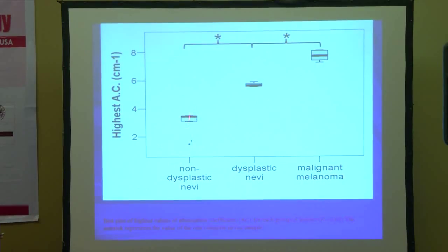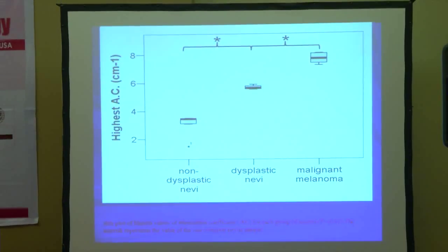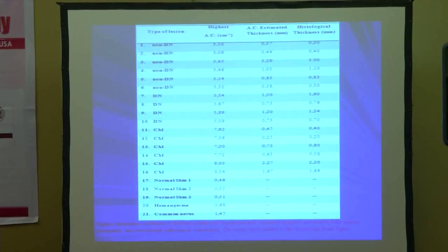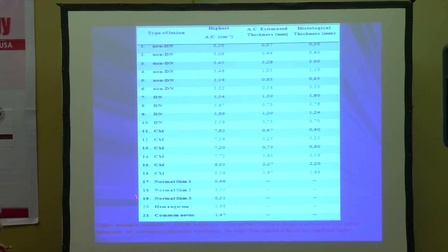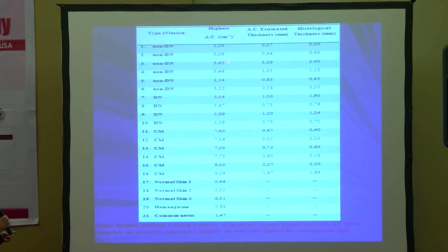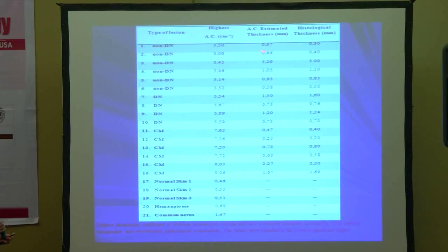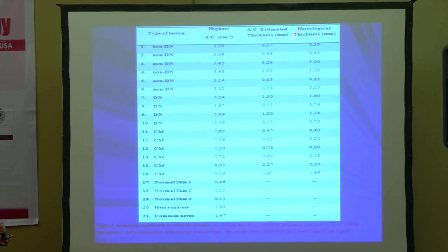Here again you can see in this graph that there is a big difference in the median values between malignant melanoma and simple nevi. In this table, you can see the six samples we have used of nevi and the controls. The attenuation coefficient is much higher due to increased scattering from pigmented skin lesions with dysplasia and architectural disorders than in common skin lesions.